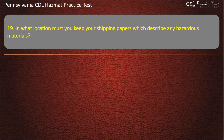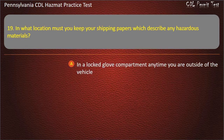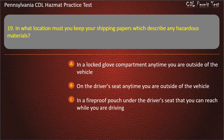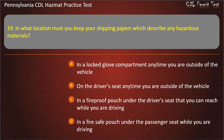Question 19. In what location must you keep your shipping papers which describe any hazardous materials? Options: In a locked glove compartment anytime you are outside of the vehicle; On the driver's seat anytime you are outside of the vehicle; In a fireproof pouch under the driver's seat that you can reach while driving; In a fire safe pouch under the passenger seat while driving. Answer: On the driver's seat anytime you are outside of the vehicle.